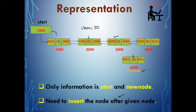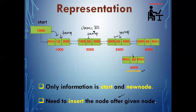First, I have to reach that particular node. I'll assign the value of start to temp. Now I'll search while temp info is not equal to 30. Temp info is not equal to 30 — true — so temp moves to the next node. Again, temp info is not equal to 30 — true — so I go to the next node. Now temp info is not equal to 30 — false — that means I have reached my required node, and I'll do my processing.